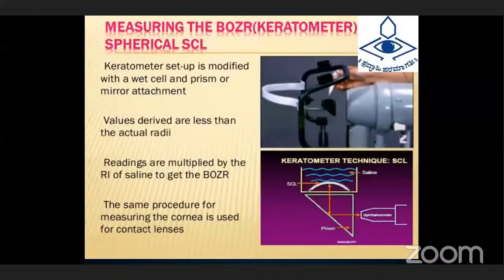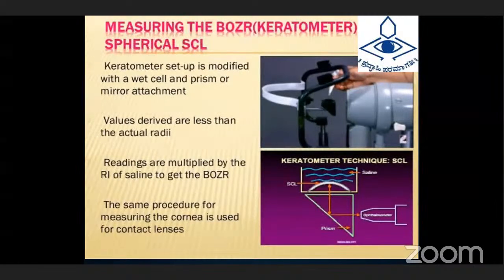For measuring the BOZR of a spherical soft contact lens, the keratometer setup is modified with a wedge and prism or mirror attachment. All values derived are less than the actual radii. The readings are multiplied by the respective refractive index of the material to get the BOZR. For RGP lenses, no saline or wet cell is used, whereas for spherical soft contact lenses, saline is used. The refractive index of the saline gives the BOZR for spherical soft contact lenses, and the same procedure used for measuring the cornea is applied.